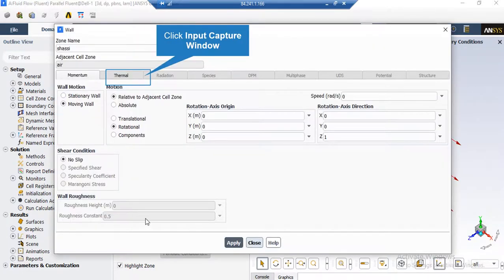After clicking on the chassis boundary, under the momentum tab, you can see that the wall motion is defined to be moving wall, and still the shear condition is no slip. Under the motion section, you can see that the relative to adjacent cell option has been defined with the rotational velocity, and the speed is defined to be zero radian per second.